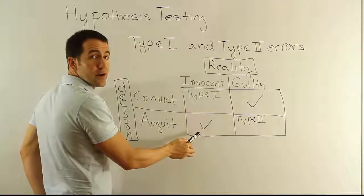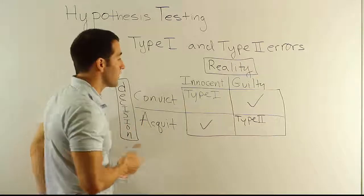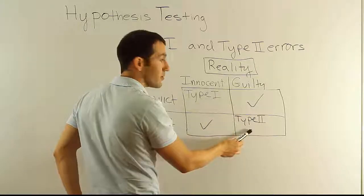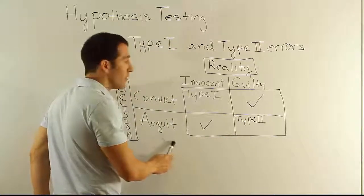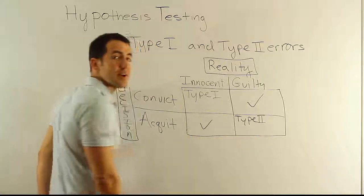Innocent person on trial, you acquit them. That's a good decision. Lastly, a guilty person is on trial, you acquit them of the crime, you let them go. You've committed another error, it's a Type II error.